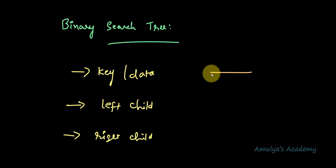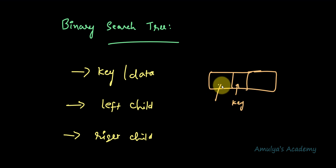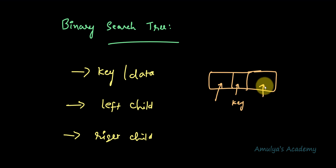We will create a node like this — it is an object. Every node will contain three parts: one is key, the second is the left child which will contain the link or reference to the left child. If this node doesn't contain a left child, the reference will be none. Similarly, it will contain the link or reference of the right child, and if the right child is not present it will store none.